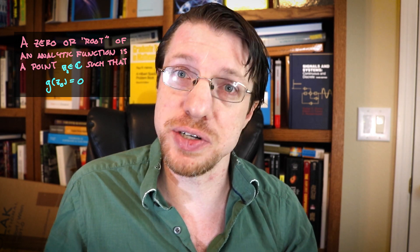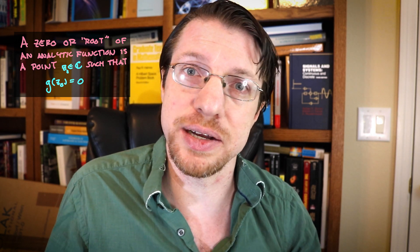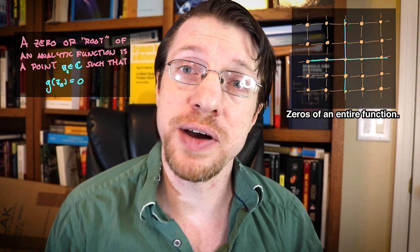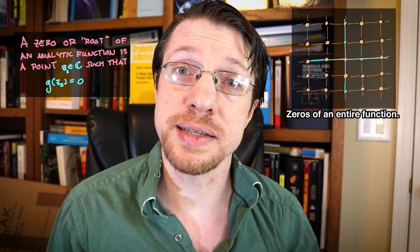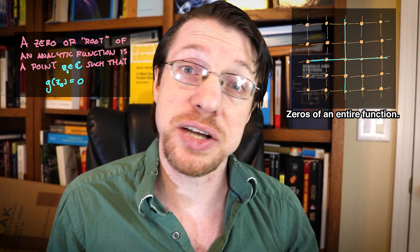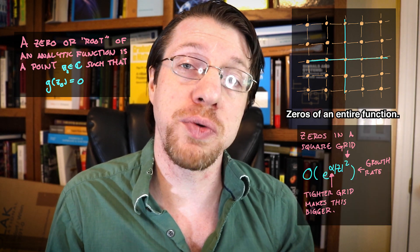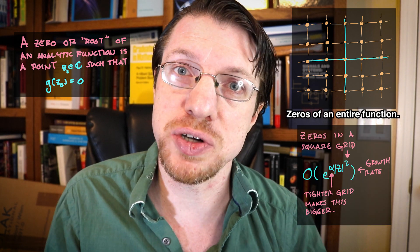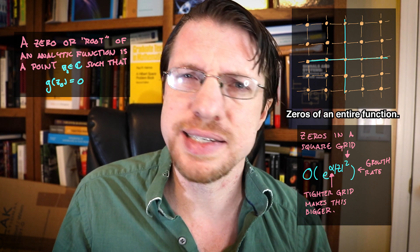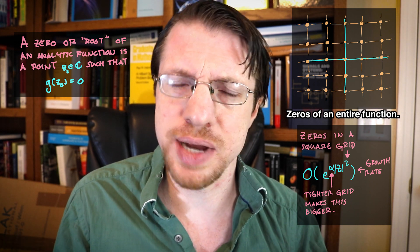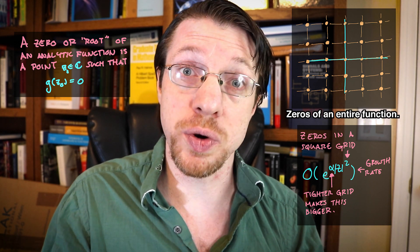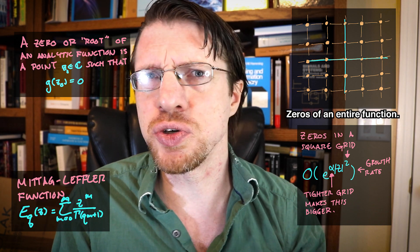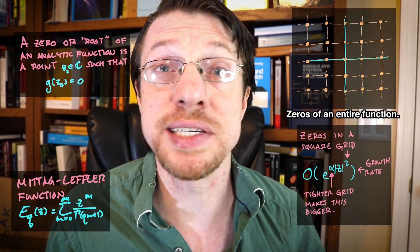For instance, if you have something that's called an entire function — something that's analytic or can be represented as a power series throughout the entire complex plane — then what you'll find is that the density of your zeros actually has a direct influence on how quickly that function grows. And conversely, if you have a function that grows at a fractional rate, so not an integer order, that function also has to have an infinite number of zeros. This would be true for something like the Mittag-Leffler function.